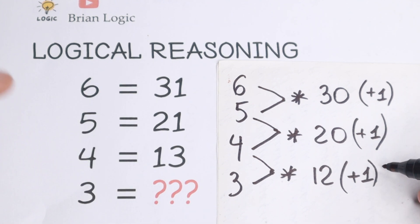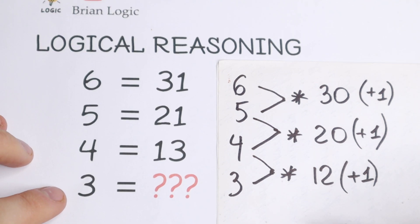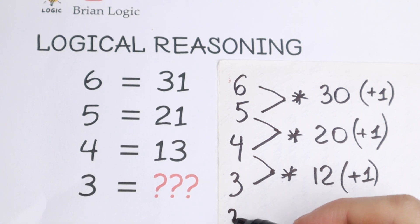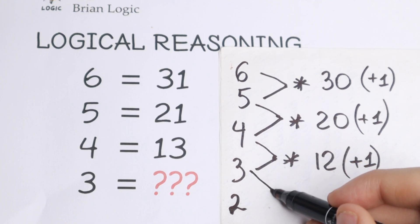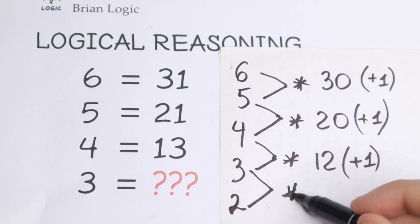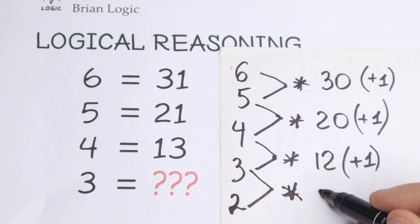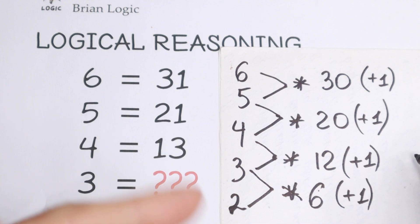What about this number? How can we find this one? Of course, easily. Under this 3, we'll have 2. Let's use the same logic: 3 times 2. If we're talking about multiplication, we'll have 6. And we need to add 1, because there's a pattern between all of these numbers. So my answer is 7.